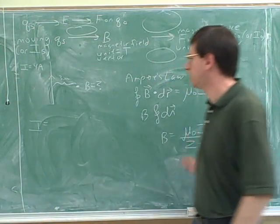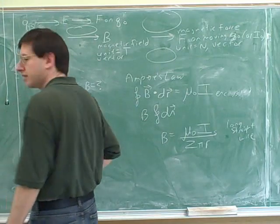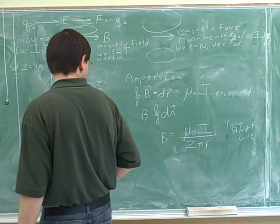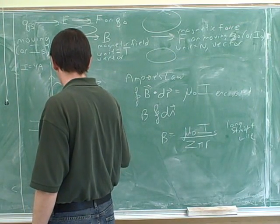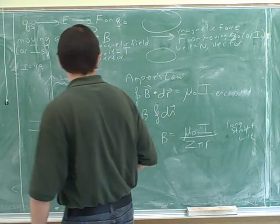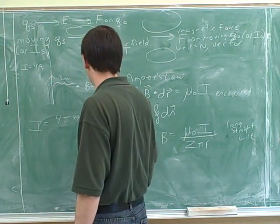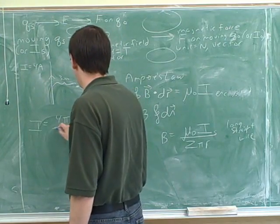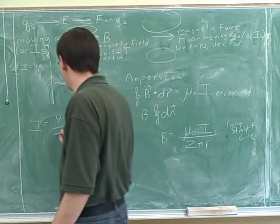So what do we plug in for mu zero? Oh, 4 pi. I didn't see that. I'm sorry. I plugged that in wrong. Yeah. So what should we plug in for mu zero? 4 pi times 10 to the negative 7. Good. And what do we plug in for I? I is 4. Right. Everything's in standard units, so I won't bother putting the units in. And in the denominator, we put? 2 pi times 3. Right.